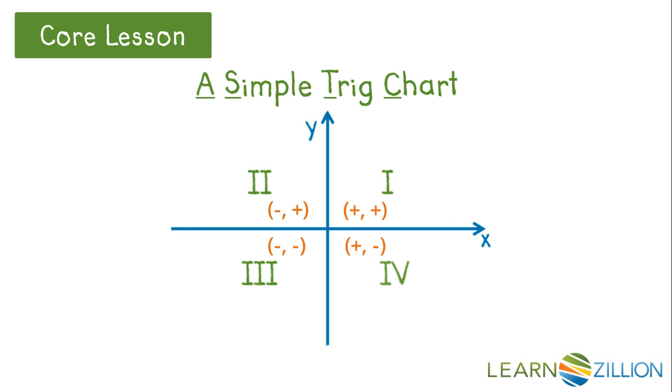Why is all of this important? Because these signs determine the signs of the trig functions. Cosine is positive wherever x is positive, because it's x over r. A positive divided by a positive is positive. Its reciprocal, secant, would also be positive here.